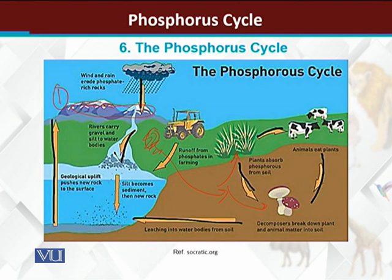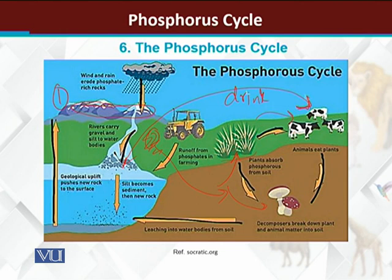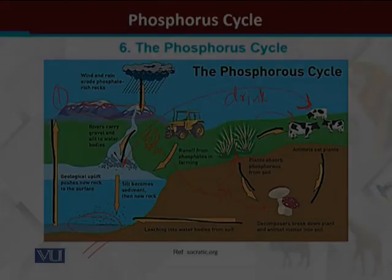Then these plant materials are utilized by animals, so phosphorus moves from plants to animals. Some phosphorus comes directly with water, and when animals drink it, they uptake the phosphorus. After this, ultimately when animals die, phosphorus goes back into the soil. When plants die, it also comes back, and plants will reuse this phosphorus again. Some phosphorus becomes part of sedimentary rocks and for a long time is out of the phosphorus cycle.